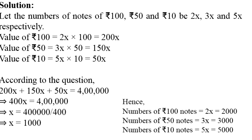अलग-अलग notes की numbers को find करने के लिए सबसे पहले हम एक variable मान लेते हैं जिसे हम x मानते हैं और उस x की multiplication हम करते हैं उन ratio से जो कि notes का ratio है। इस तरह से number of notes of 100 rupees, 50 rupees, और 10 rupees हो जाएंगे 2x, 3x and 5x respectively.